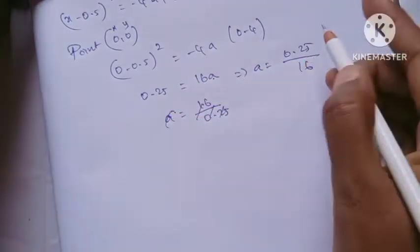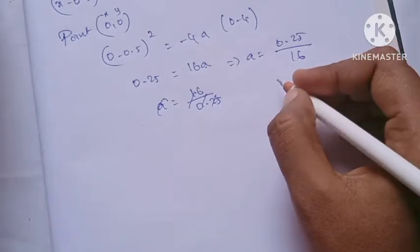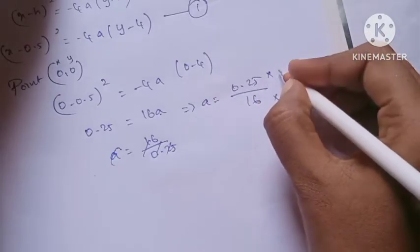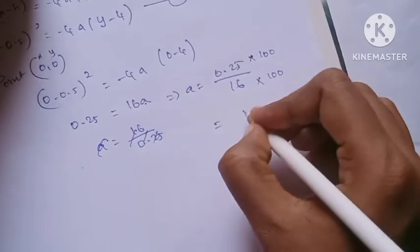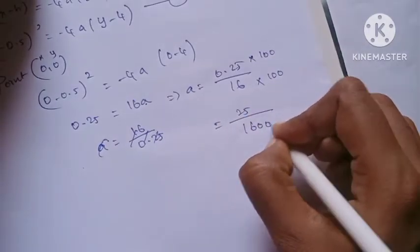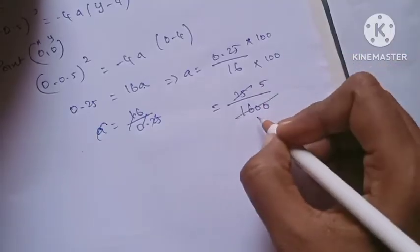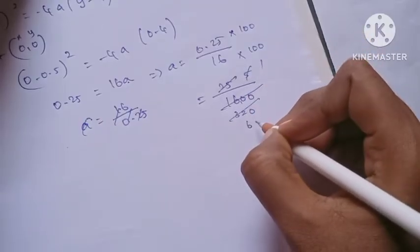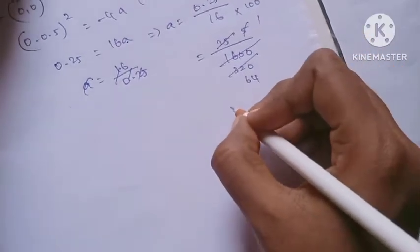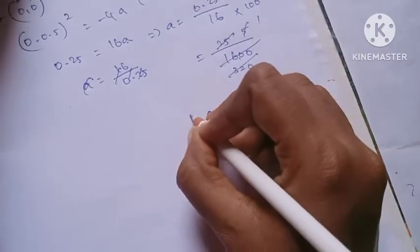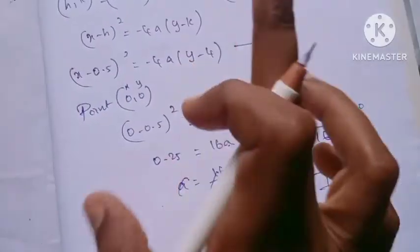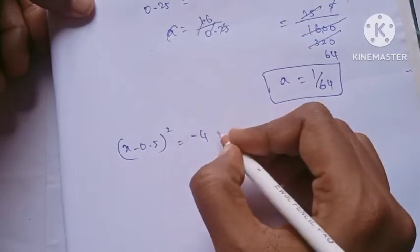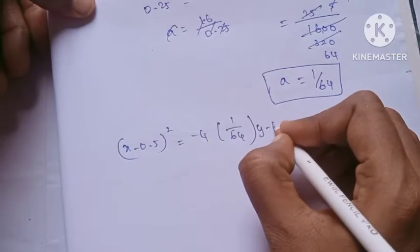So a equals 0.25 divided by 16. Simplifying: multiply numerator and denominator by 100, giving 25 divided by 1600, which simplifies to 1 divided by 64. This is the value of 'a'. Now substituting a = 1/64: x minus 0.5, whole square, equals minus 4 times 1/64 times y minus 4.